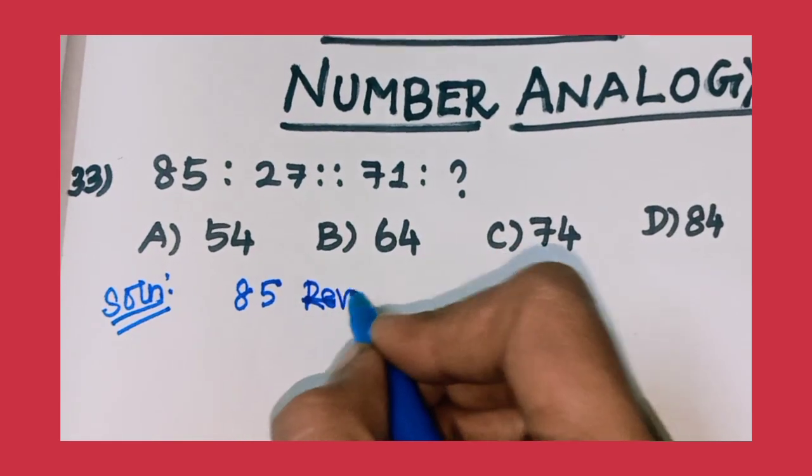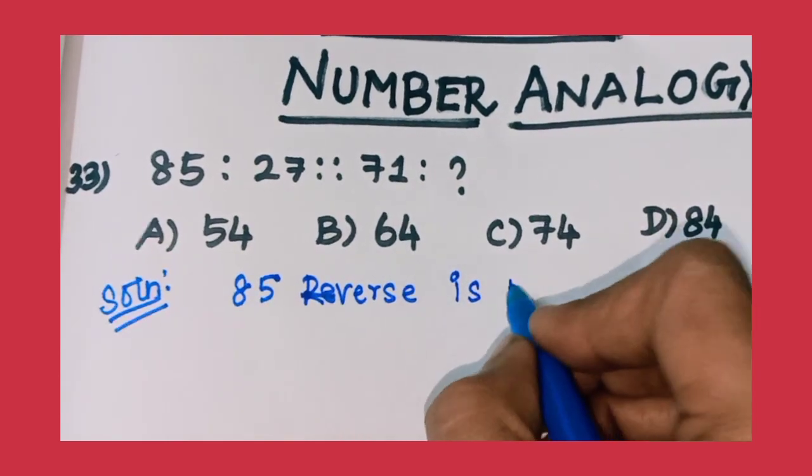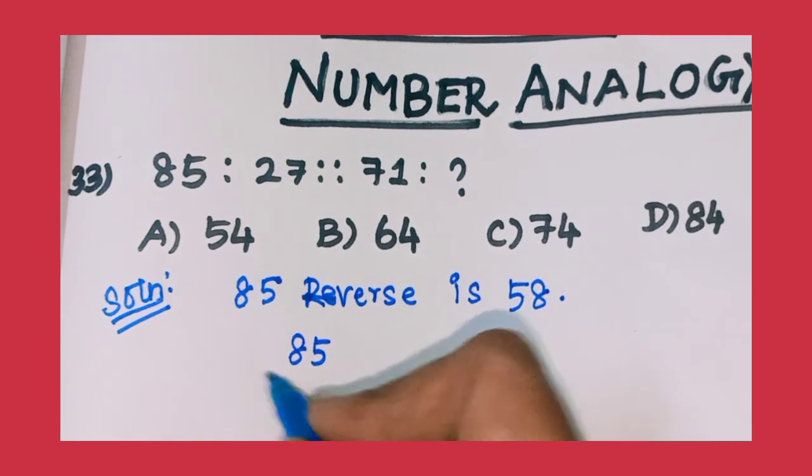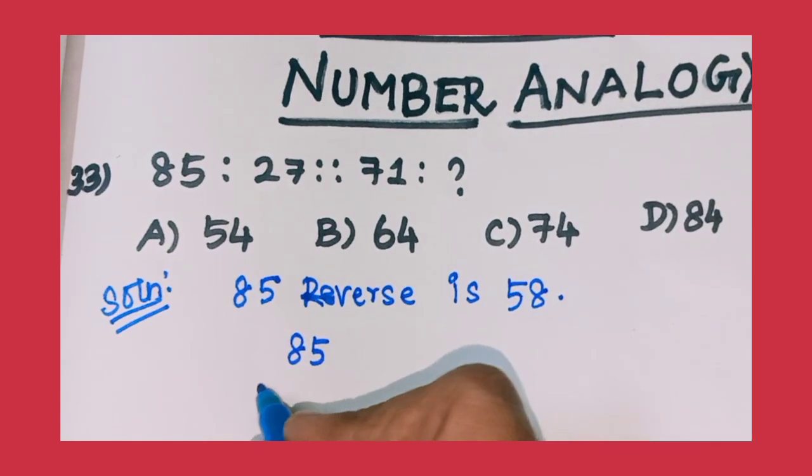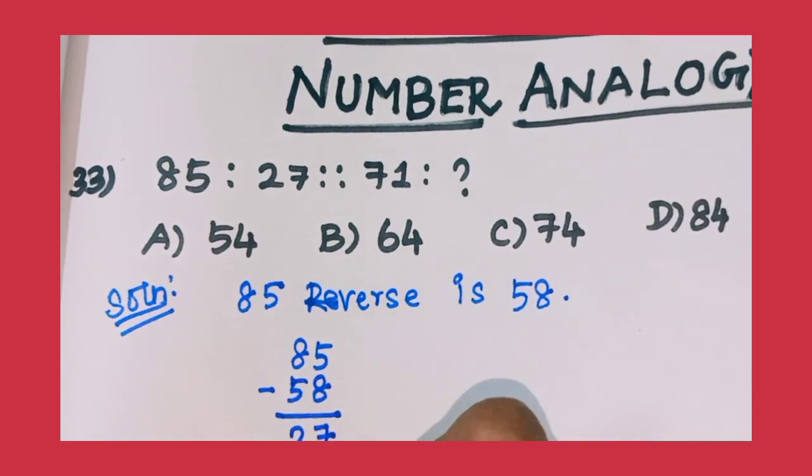First term is 85, reverse is 58. So 85 minus 58.